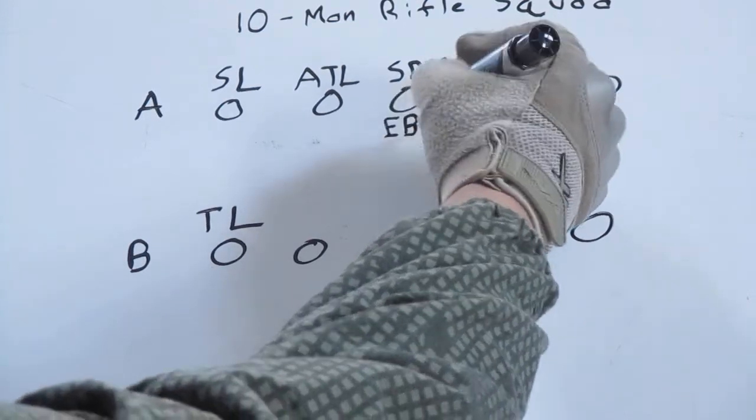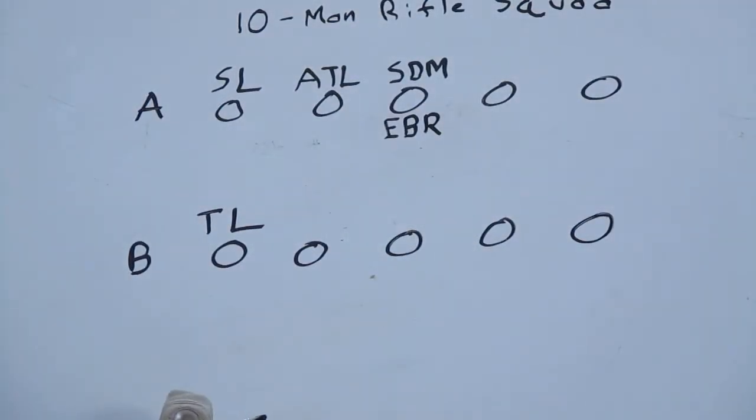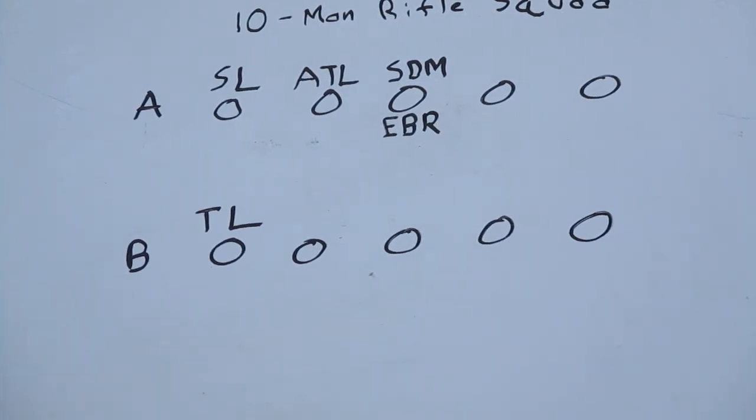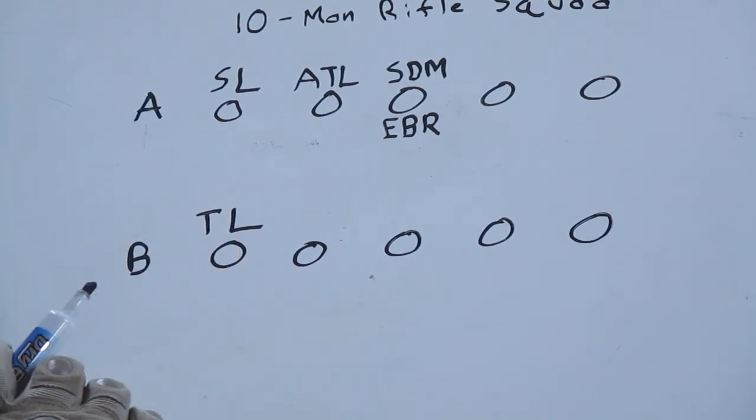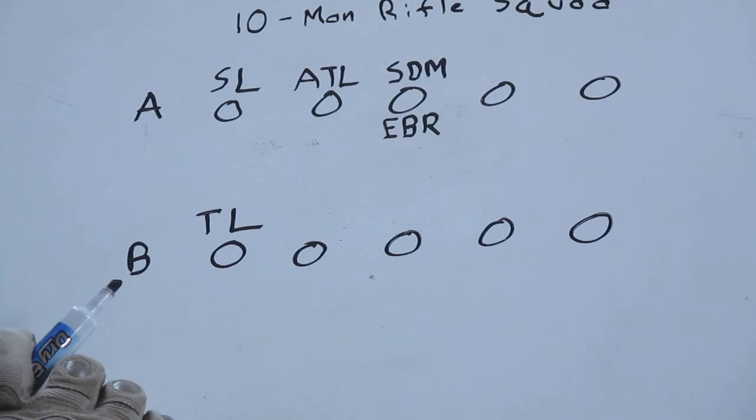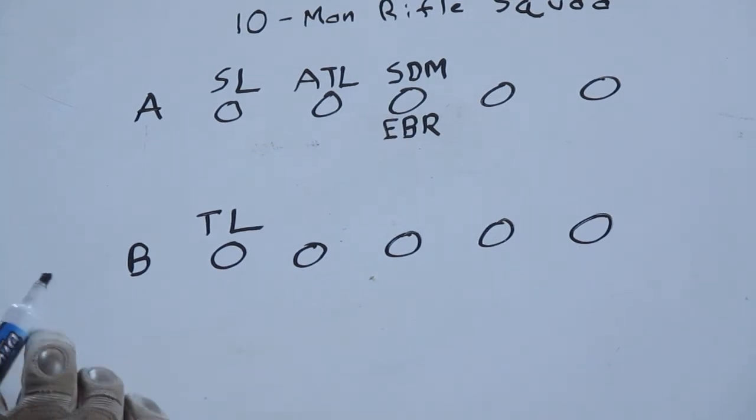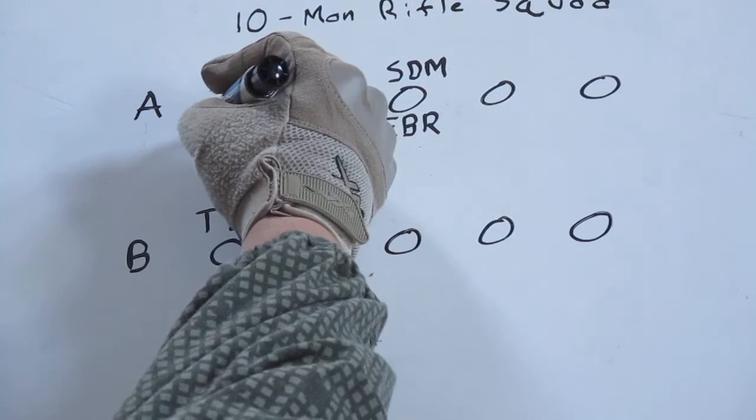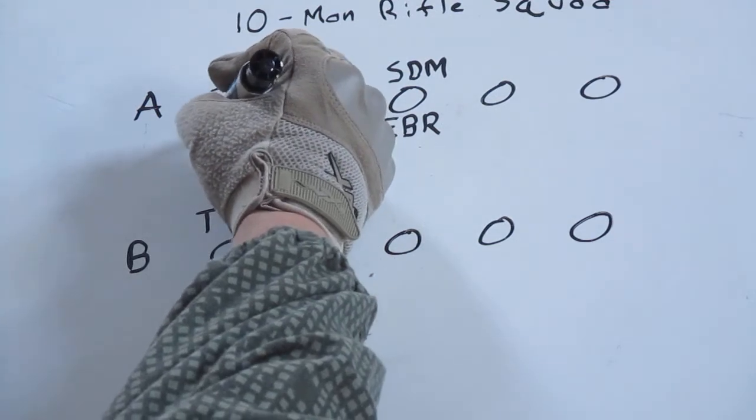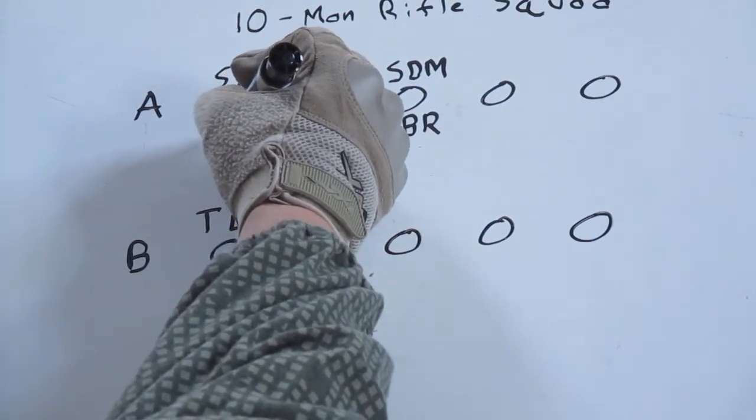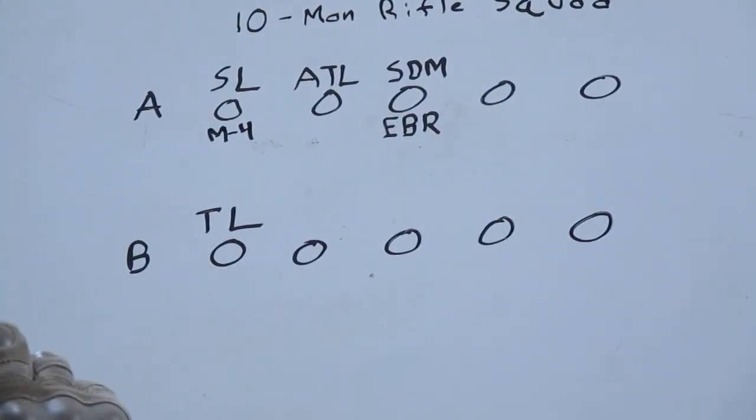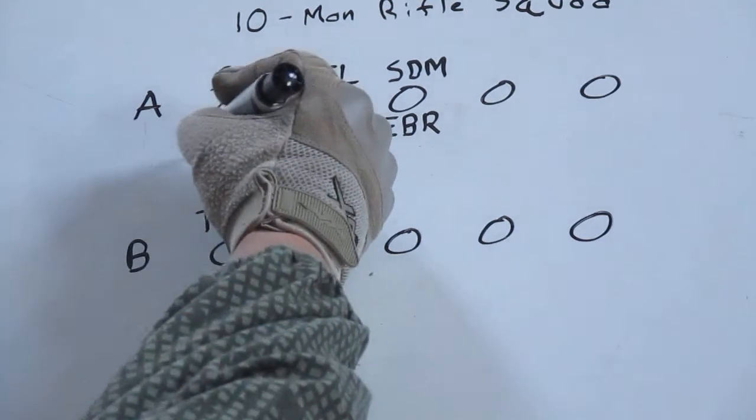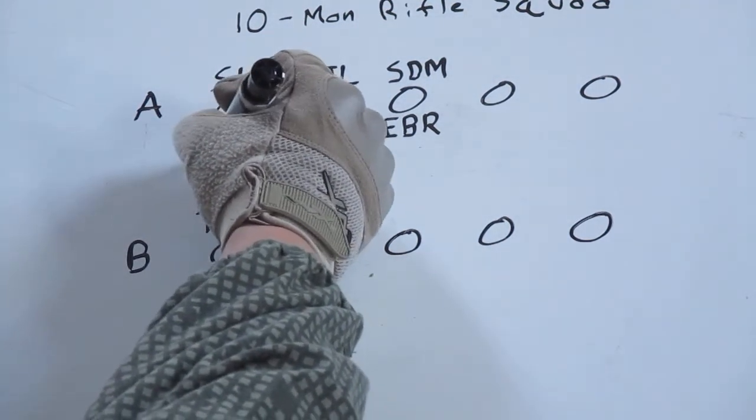They should have a scoped rifle, preferably semi-automatic, but it's whatever they can get a hold of, whatever they're comfortable with. I'm going to give that person right now an EBR, an enhanced battle rifle. Research it if you don't know what it is - it's a modified M14. Your squad leader should have some type of carbine or rifle, so for right now we're going to give them an M4.